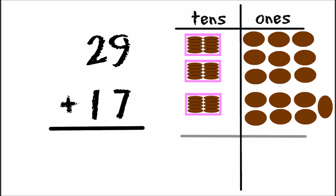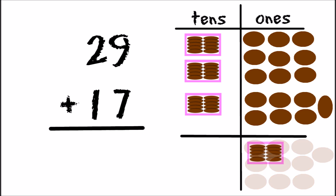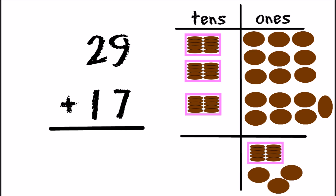So we'll start by adding our individual cookies, because we always start in the ones column. Let's count: one, two, three, four, five, six, seven, eight, nine, ten cookies. We're going to stop for a minute and put those cookies into a box. Then we're going to count the rest of the cookies: one, two, three, four, five, six cookies left. So in our ones column, we have one box of ten cookies and six individual cookies, or sixteen cookies. Nine plus seven equals sixteen.